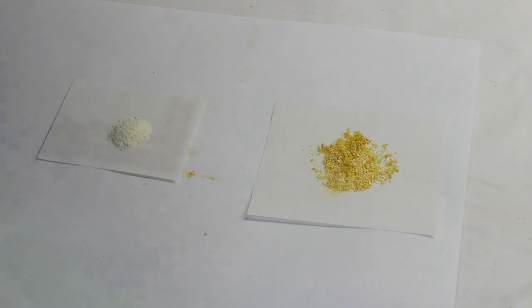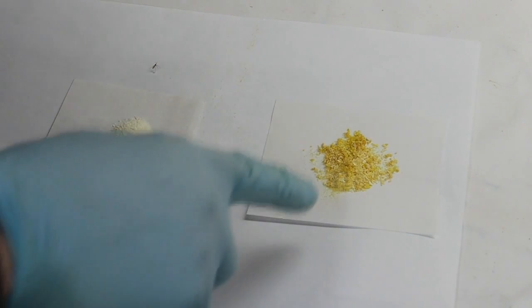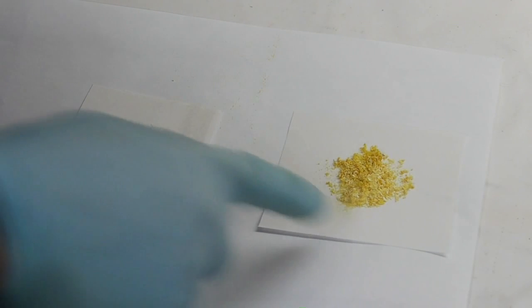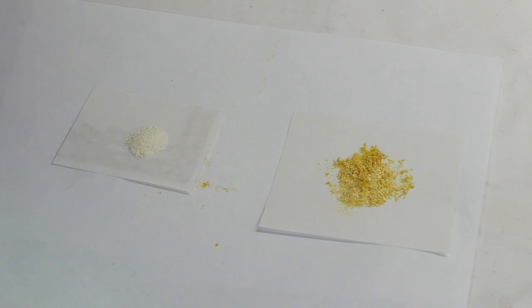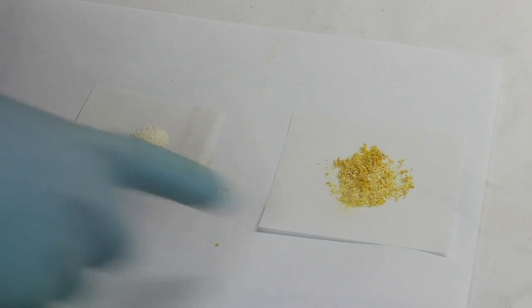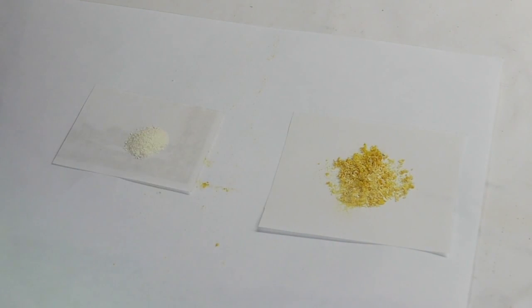So here we have the caffeine that I just extracted today - this is from coffee, which I'll get into in a minute - and this is the batch from last time from the green coffee beans. As you can see, there's quite a bit more impurities in the batch I made today, so let me show you the process and explain why it looks like that.